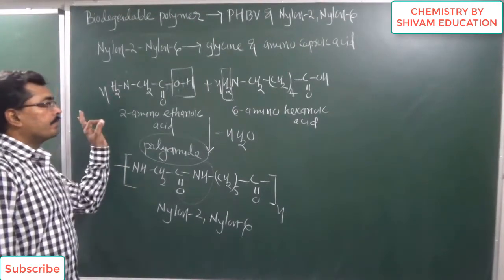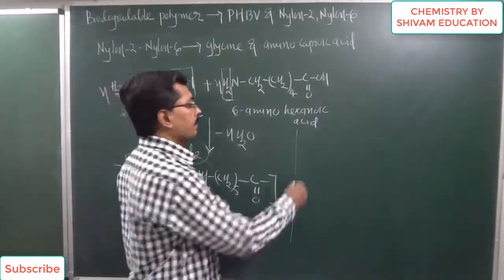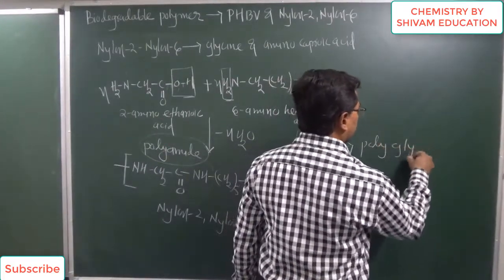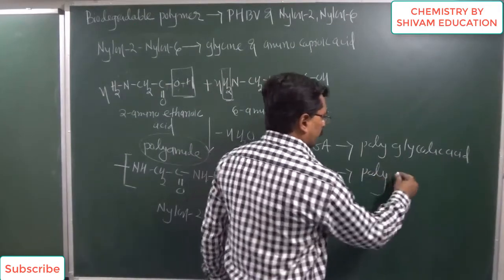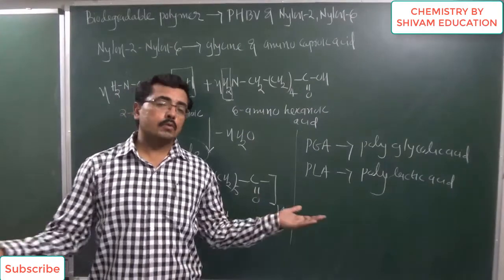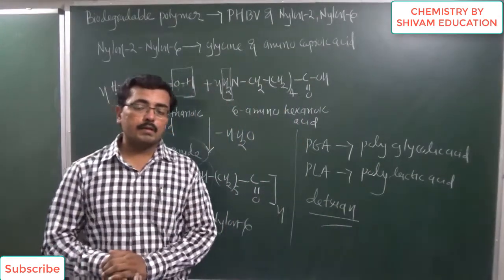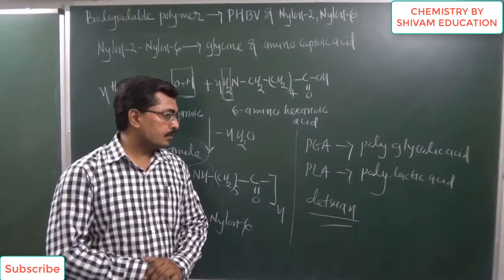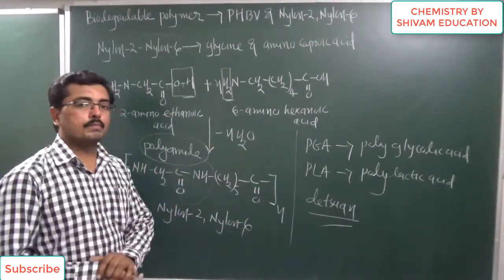Nylon 2-Nylon 6 is made from 2-amino ethanoic acid. There are also different other biodegradable polymers. For example, PGA — poly glycolic acid — is a biodegradable polymer. Then PLA — poly lactic acid — is also a biodegradable polymer. So PGA and PLA are both biodegradable polymers. Then one more biodegradable polymer is Dextran. So Dextran, a polyester group biodegradable polymer, is also used.